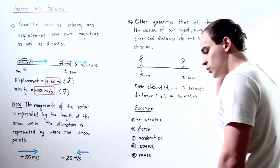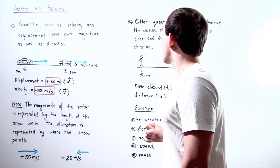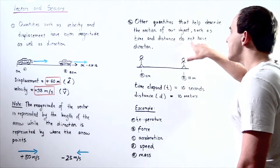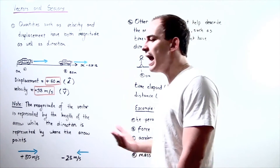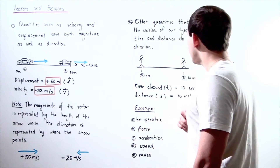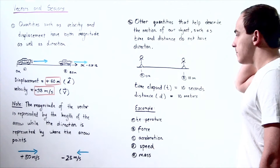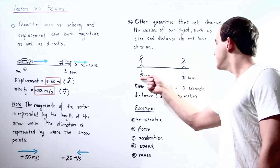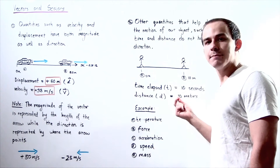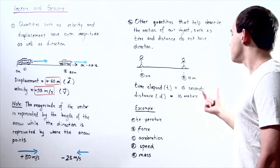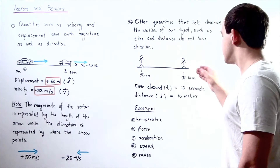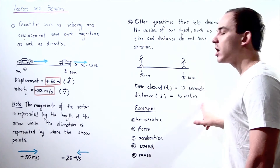Now let's talk about physical quantities that only have magnitude and no direction. Quantities such as time and distance do not have direction. Whenever we specify elapsed time, we never specify a direction for time, because time only increases. For example, if a person walks from point A to point B 10 meters away and it takes 10 seconds, the time is 10 seconds and the distance is 10 meters — both are just magnitudes.